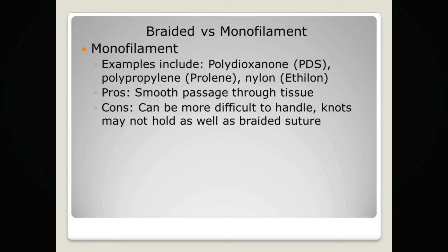Monofilament sutures such as polydioxanone and nylon have the opposite pros and cons to braided sutures. Because of the monofilament structure, they allow smooth passage through tissue and don't create the damage related to friction from a braided suture. The cons are that the suture material can sometimes be difficult to handle, particularly once bodily fluids are present, making it quite slippery. The knots also tend not to hold as well, so it is often advised to apply at least six or seven throws when using a monofilament suture.